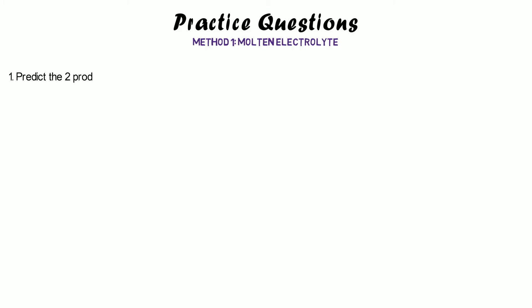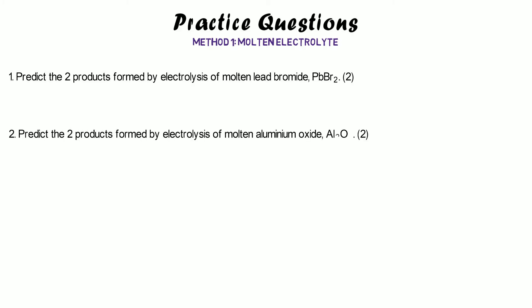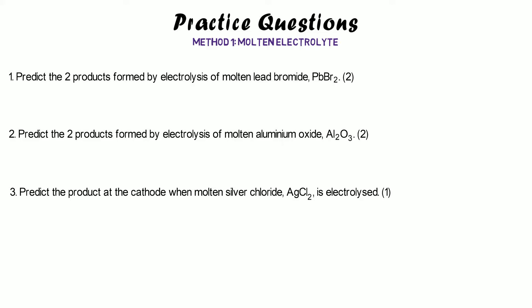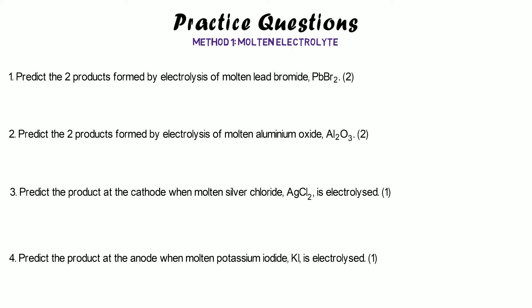Now we have some practice questions for predicting the products of electrolyzing a molten electrolyte. First, what is made when we electrolyze molten lead bromide? Second, molten aluminium oxide. The next two are more specific: what is produced at the cathode for molten silver chloride, and what will be produced at the anode for molten potassium iodide? You'll need to use PANIC because it's asking specifically about each electrode. The ions in silver chloride and potassium iodide are provided to help — pause the video and have a go.